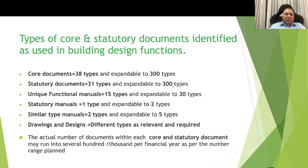The types of core and statutory documents identified — these are given primarily in my book listed at the end of this presentation. Identified are: core documents, 38 types expandable to 300 types; statutory documents, 31 types expandable to 300 types; unique functional manuals, 15 types; statutory manuals, 1; similar type of manuals, 2; and drawings and designs of different types as relevant for each package. The actual number of documents within each category can run into several hundreds and thousands per financial year.